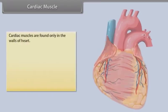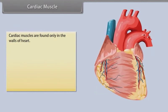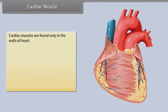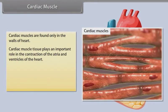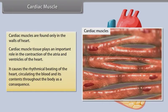Cardiac muscles are found only in the walls of the heart. Cardiac muscle tissue plays an important role in the contraction of the atria and ventricles of the heart. It causes the rhythmical beating of the heart, circulating the blood and its contents throughout the body.